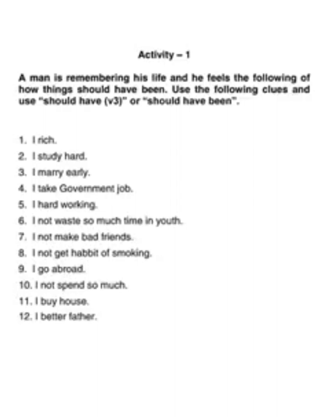Eleventh: I should have bought a house. Twelfth: I should have been a better father — there is no verb there, so should have been. So now you understand: should have is used with V3. But when should goes in the past, it becomes should have with V3, and when there is no verb, it becomes should have been.